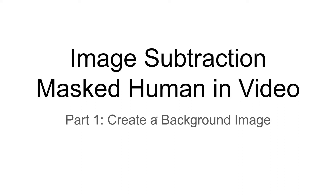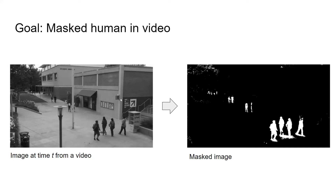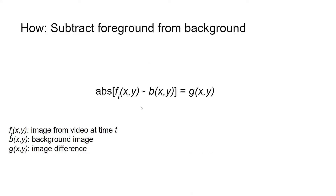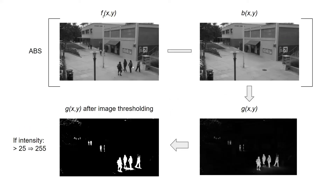Hello everybody. In this first part video I would like to show you how to create a background image for an image subtraction process. Suppose that you have a video file and you would like to create a segmented video showing the person in the video, as shown in the example in the slide. Mathematically, you can achieve that by subtracting the image at time t from the background image. Here F subscript t is the image in the video at time t, B is the background image, and G is the image difference.